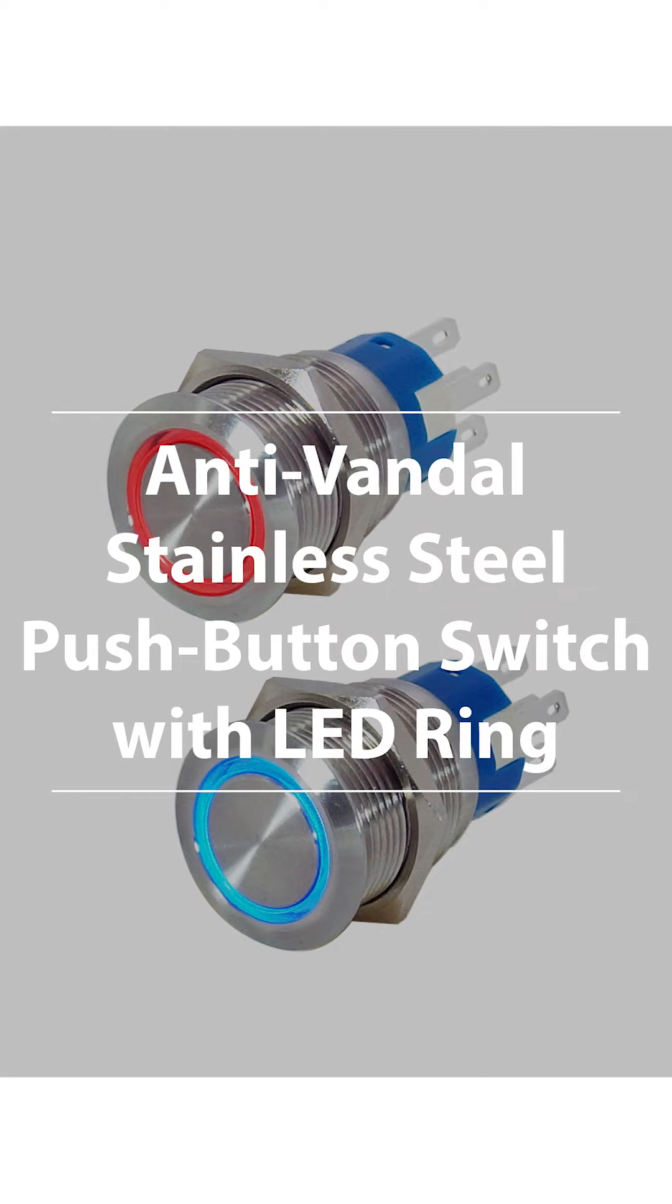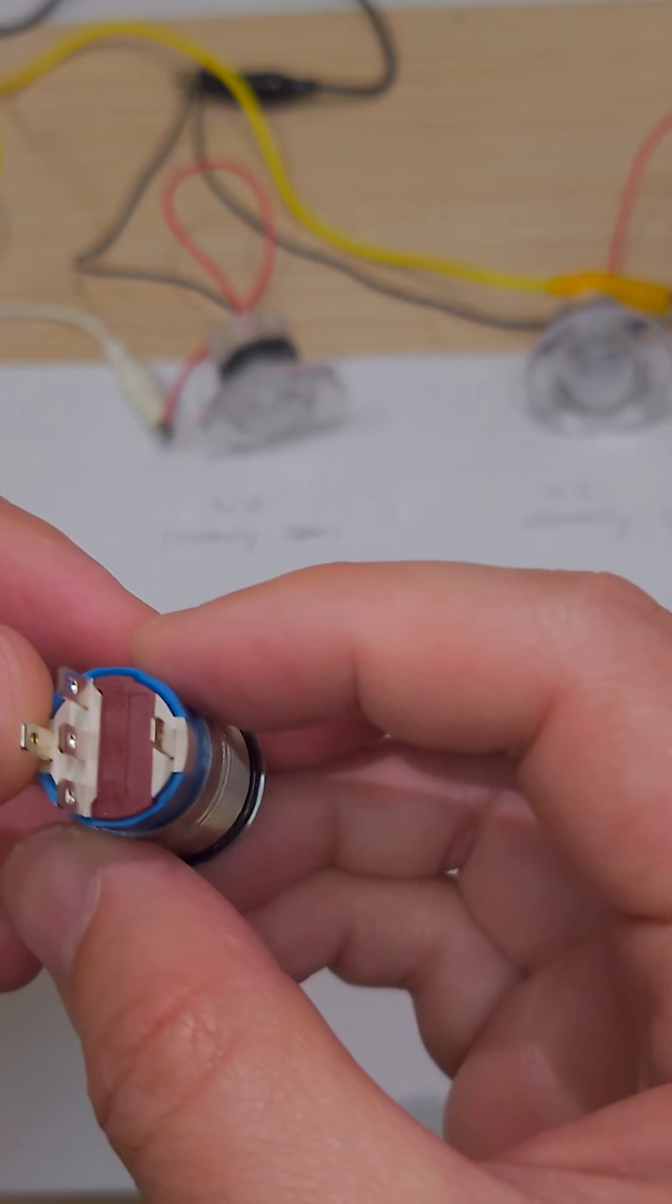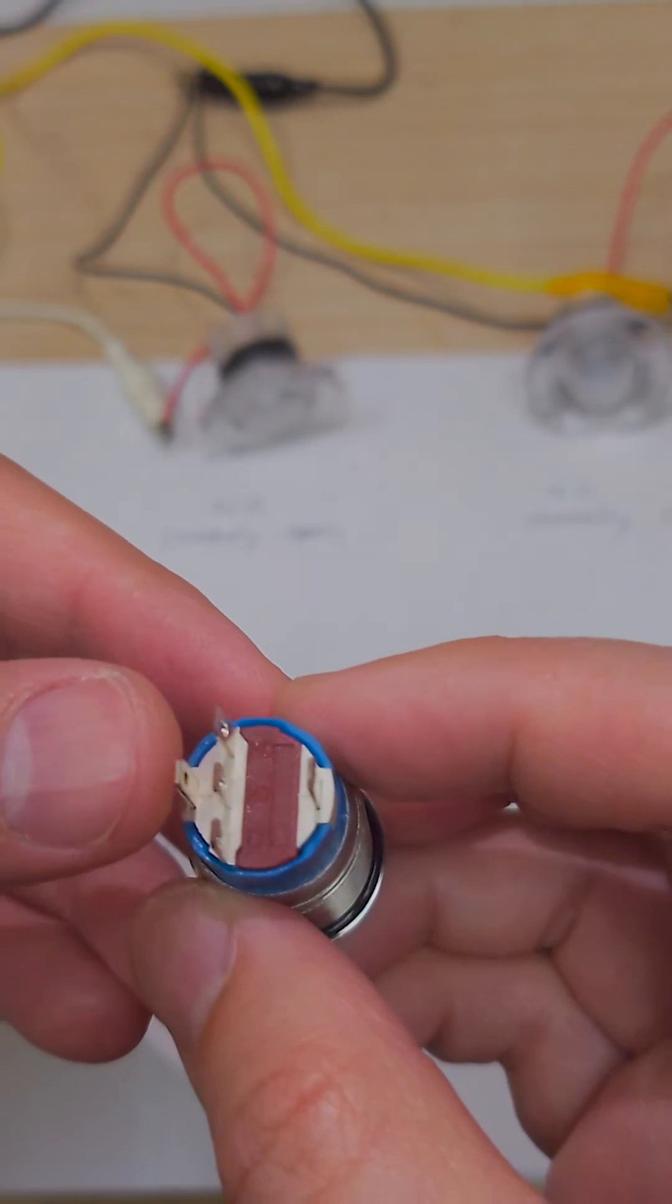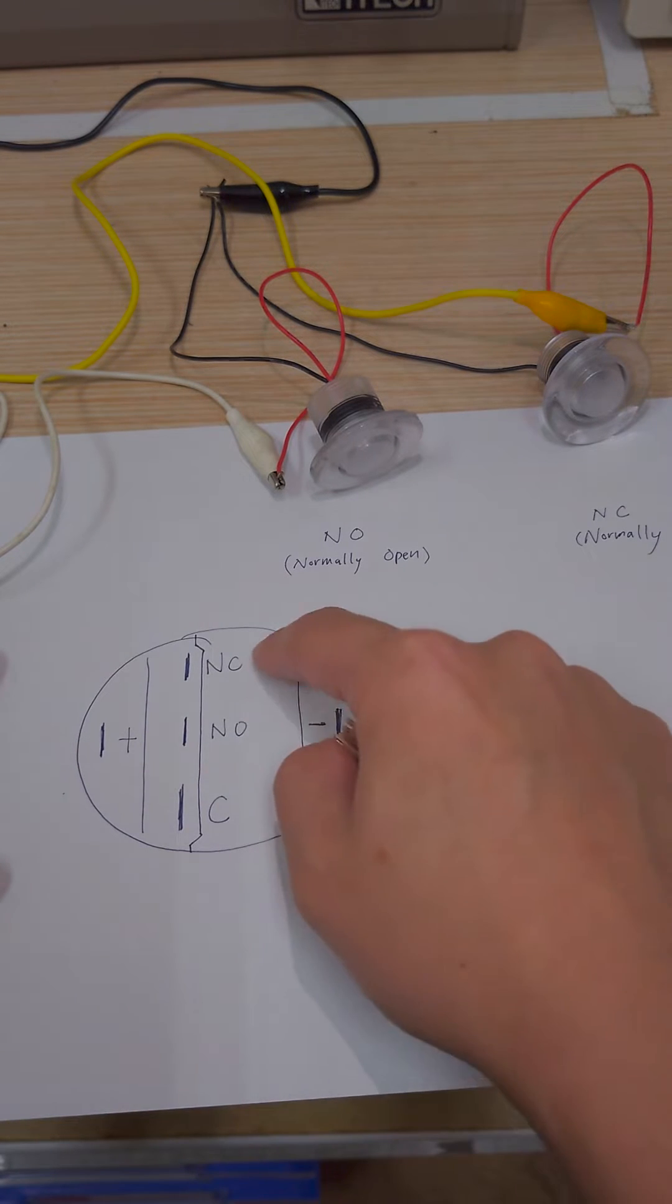Here's a quick tutorial on how to wire this 5-pin metal push-button switch. If you check the switch body, you will see there are 5 pins: LAT positive, LAT negative, NO, NC, and COM.